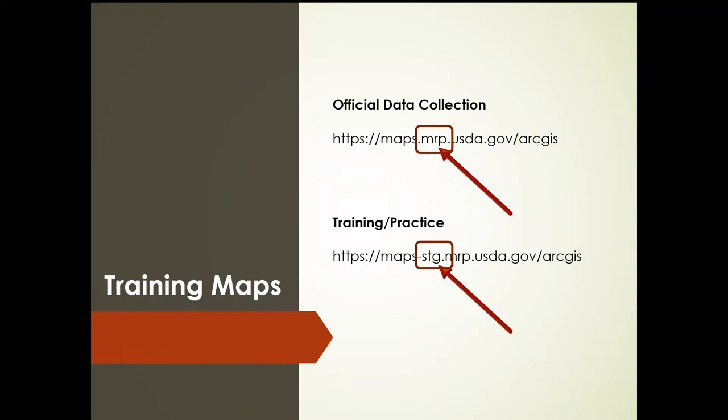The training maps are pretty clearly marked. They're titled with TRAINING in all caps, the thumbnail says training, and even the basemap is a plain light gray canvas with no imagery. So there are signs even when you're in the map that tell you whether you're in an official data collection map or a training map. Keep those clear, and when in doubt, sign out.